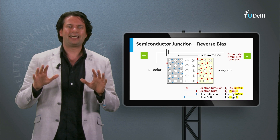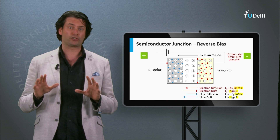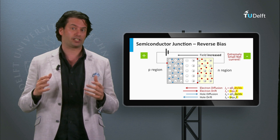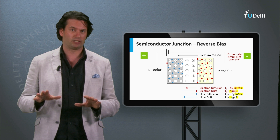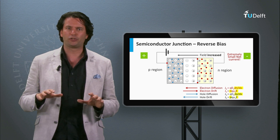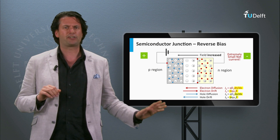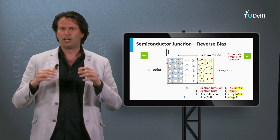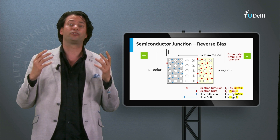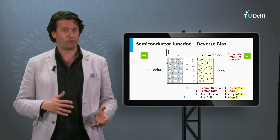In summary, in the dark under forward bias, the diffusion of charge carriers across the depletion zone is dominant, whereas under reverse bias the drift of charge carriers is dominant. Under forward bias in the dark, the p-n junction can produce relatively large currents, whereas in reverse bias it generates very small currents. Such a device is called a diode — it has a high conductance in forward bias but a low conductance in reverse bias.